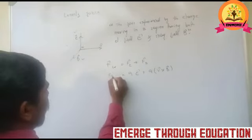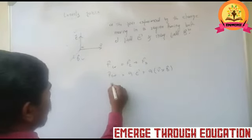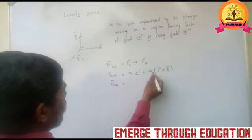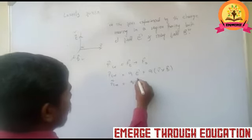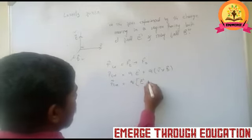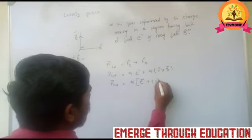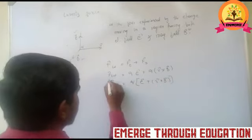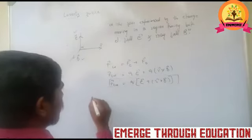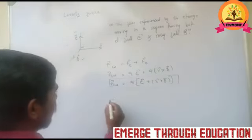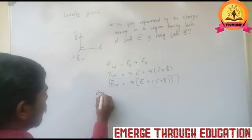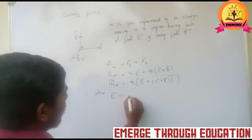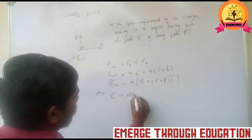The total Lorentz force is equal to Q times the quantity E plus V cross B. This is the expression for Lorentz force, where E and B are the applied electric field and magnetic field respectively.